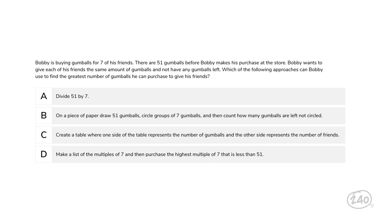Bobby is buying gumballs for seven of his friends. There are 51 gumballs before Bobby makes his purchase at the store. Bobby wants to give each of his friends the same amount of gumballs and not have any gumballs left. Which of the following approaches can Bobby use to find the greatest number of gumballs he can purchase to give his friends?